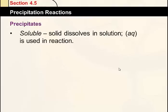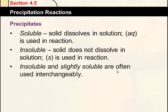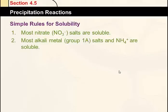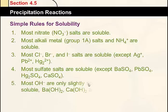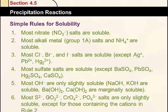A precipitate is insoluble. Something that's soluble is a solid that dissolves in solution; insoluble would be a precipitate that does not dissolve. Insoluble and slightly soluble are often used interchangeably. Here are the rules: nitrates are soluble, alkali metals are soluble, and NH4+ are soluble. Alkali metals being like potassium, sodium, and lithium. Most halogens are soluble except for some. Most sulfates are soluble except for some. Hydroxides can be soluble but only some of them. And then we have sulfides, carbonates, chromates — you need to know all of these.